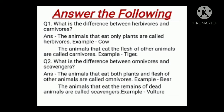Question number 2: what is the difference between omnivorous and scavengers? Answer: the animals that eat both plants and flesh of other animals are called omnivorous. Example: bear. The animals that eat the remains of dead animals are called scavengers. Example: vulture.